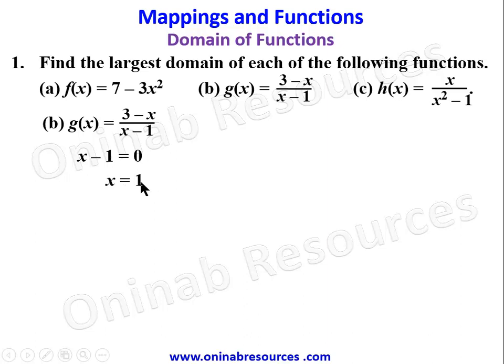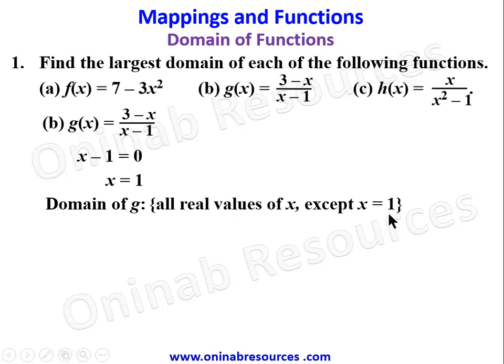Therefore x = 1. In the statement of the domain of the function, we say the domain of g is all real values of x except x = 1, because if you put x = 1 into this function, the function becomes undefined — it gives 2 over 1 - 1, which is 2 over 0, and 2 over 0 is undefined. So any other value of x will fit in, and the domain of g(x) is all real values of x except x = 1.